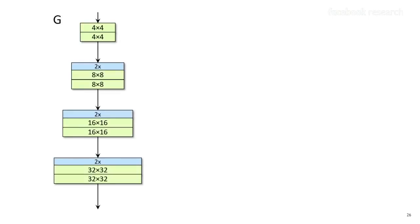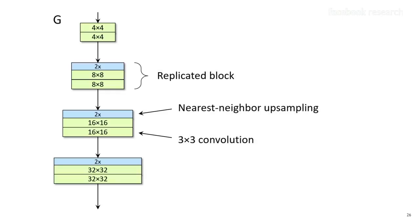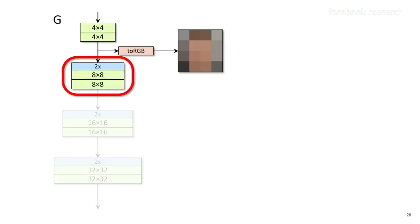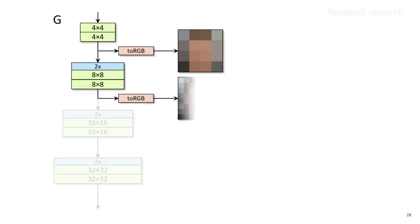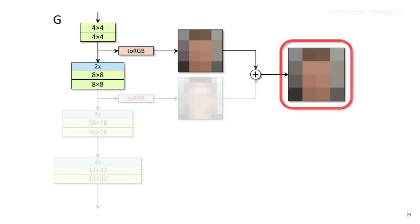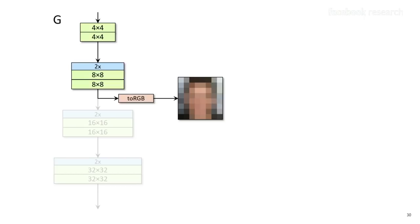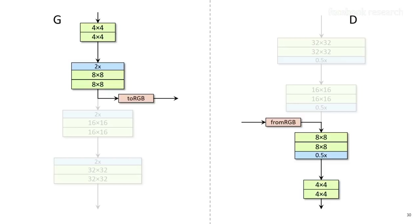That's the basic idea. Our generator is made up of replicated blocks consisting of upsampling and 3x3 convolutions. We can extract a low-resolution image at any point by passing activations through a 1x1 convolution. When we increase the resolution, we cannot add new layers abruptly because they are completely untrained and would cause a sudden shock. Instead, we extract two images at different resolutions and do a linear crossfade to gently introduce the new layers. The discriminator is a perfect mirror image of the generator, and both networks grow in synchrony using the same linear crossfades.